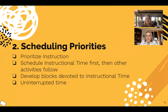Number two is the scheduling priorities. This is going to be different depending on the needs of your school. You're going to want to prioritize instruction — schedule that instructional time first, then your other activities. Develop blocks devoted to instructional time and make this uninterrupted time. At some schools, if reading is their priority, they may have posters posted outside on the door that this is their instructional reading block — please do not interrupt unless it's an emergency.